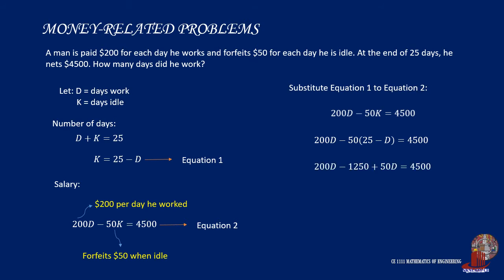Expanding terms, we get 200D minus 1,250 plus 50D is equal to 4,500. Rearranging terms, 250D is equal to 5,750. By dividing each side by 250, D is solved as 23. The man worked for 23 days.